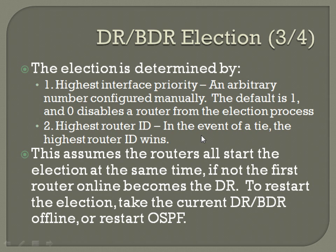Router ID, as we discussed before, is going to be, in general if you've configured it right, the highest IP address for a loopback on a particular router — your logical interface. You really don't want to leave it up to the highest router ID. Usually, your network is going to be set up in such a way that either because of where they're sitting on the network, the type of links connecting to them, or even the type of equipment, you're probably going to want to prefer one or two routers over the others to act as the designated router and the backup designated router.